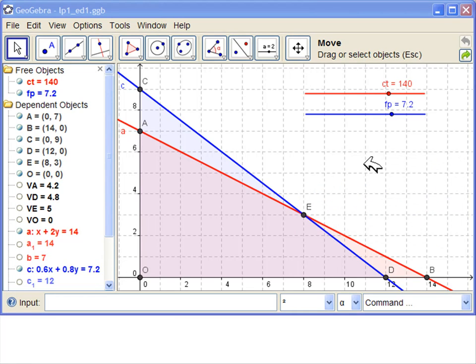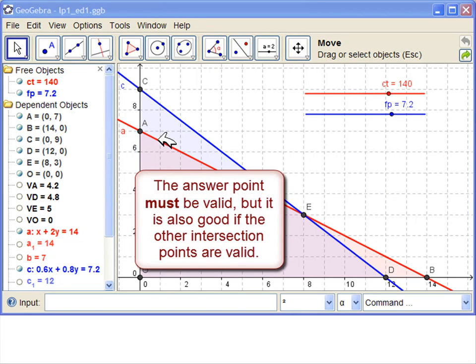so we have eight filing cabinets of type A and three filing cabinets of type B. It's also good if the other intersection points are grid points.